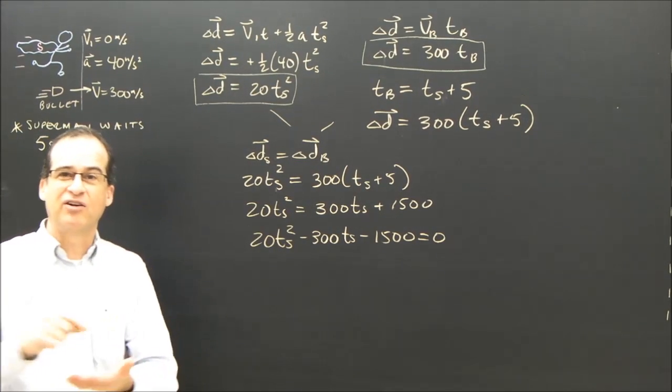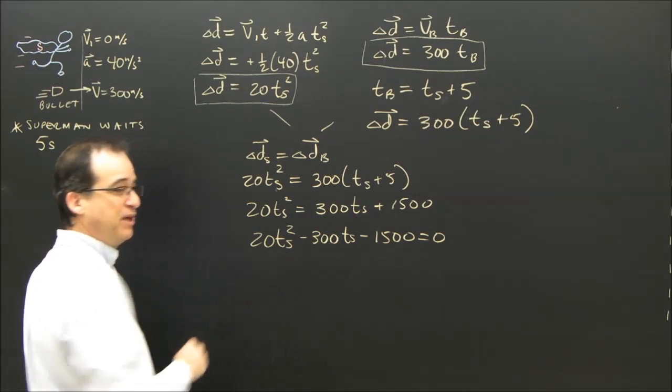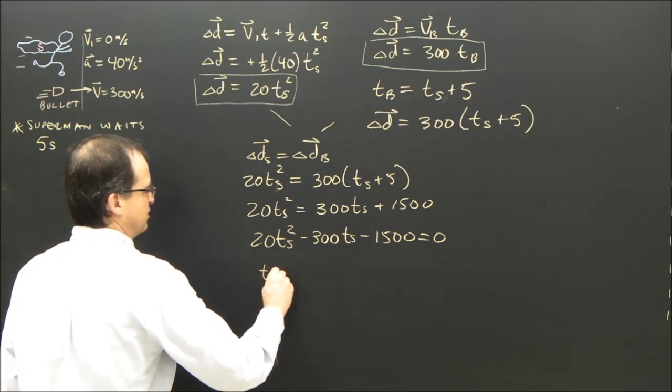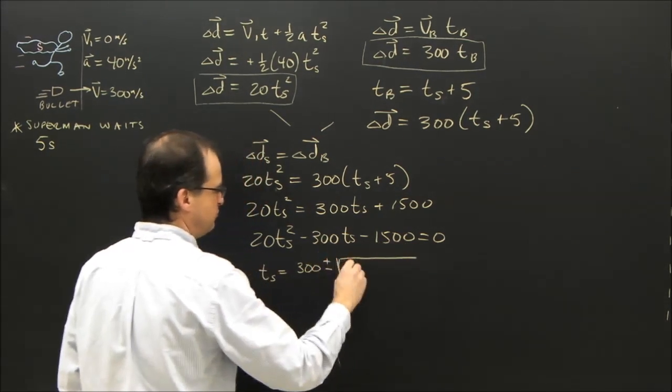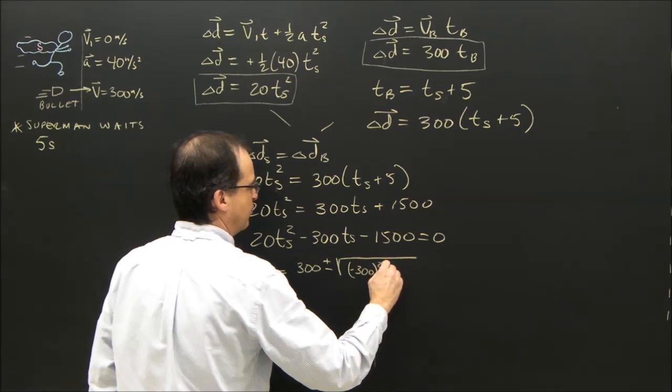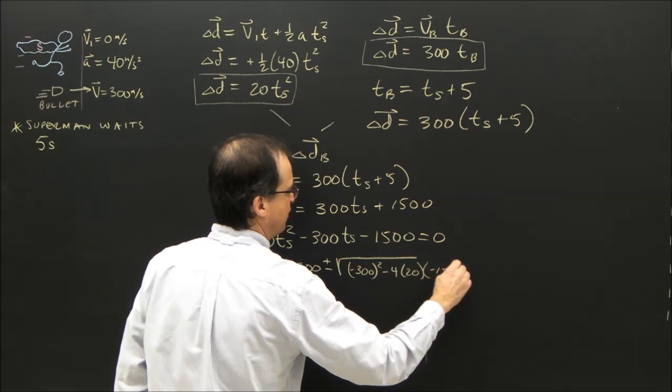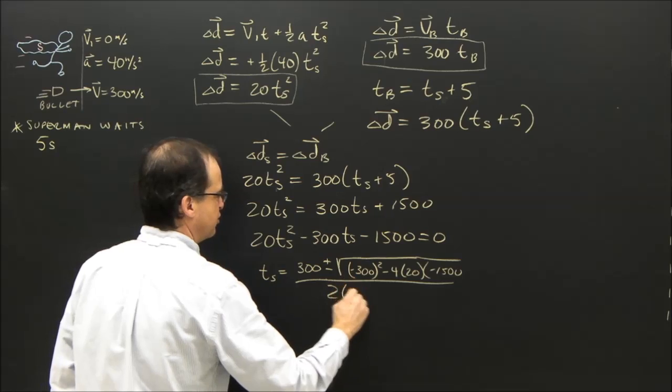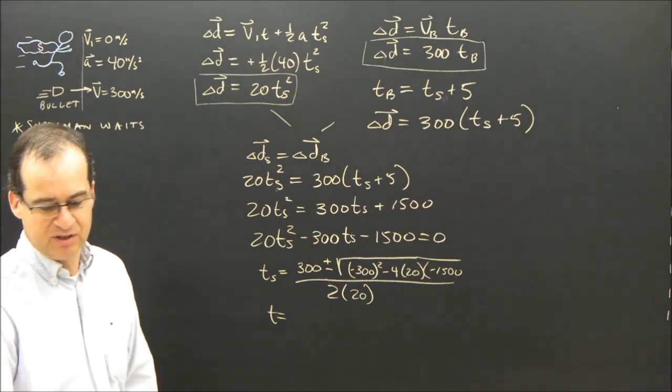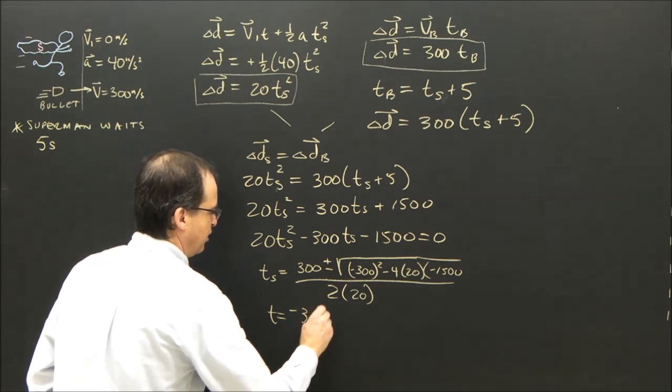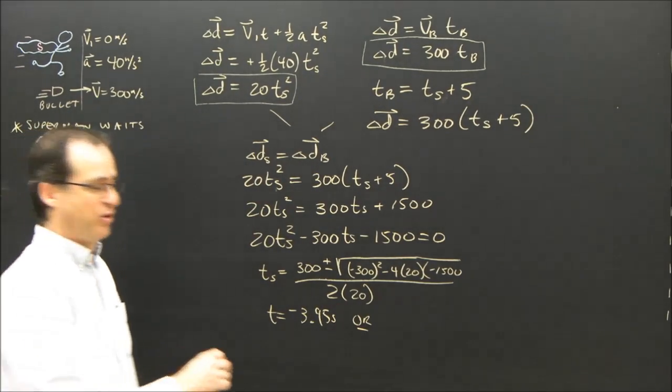So again, your calculators have a quadratic equation. You remember it's negative B. Well, B is negative 300, so time of Superman is negative B, which in this case would be positive, plus or minus the square root of negative 300 squared minus 4 times 20A times C, negative 1,500, all over 2 times A, which is 20. So T equals, and I get 2 times, negative 3.95 seconds or 18.95 seconds.